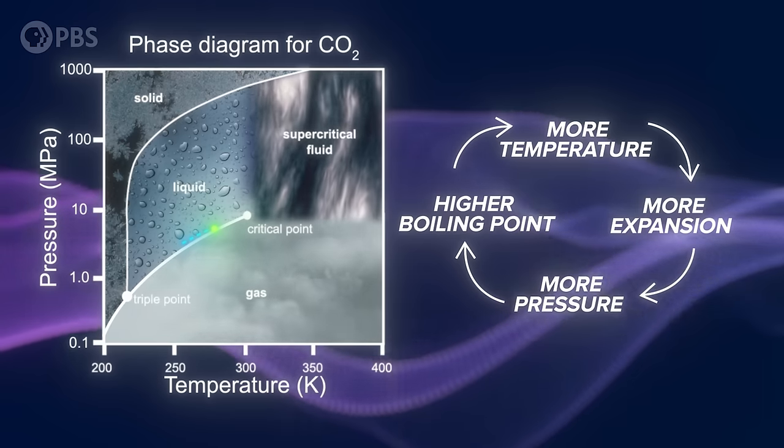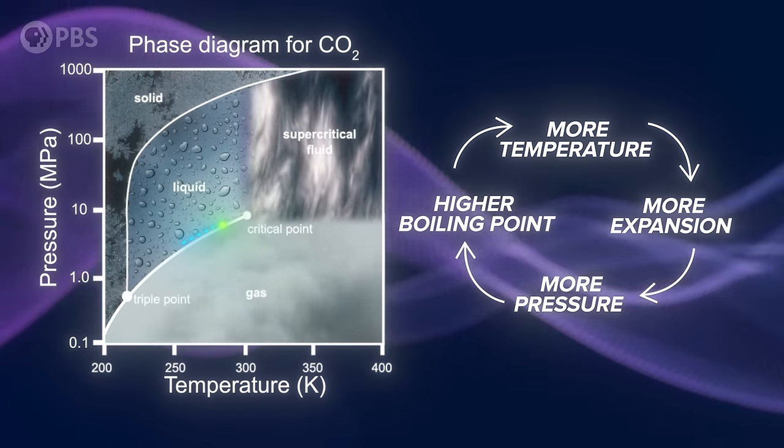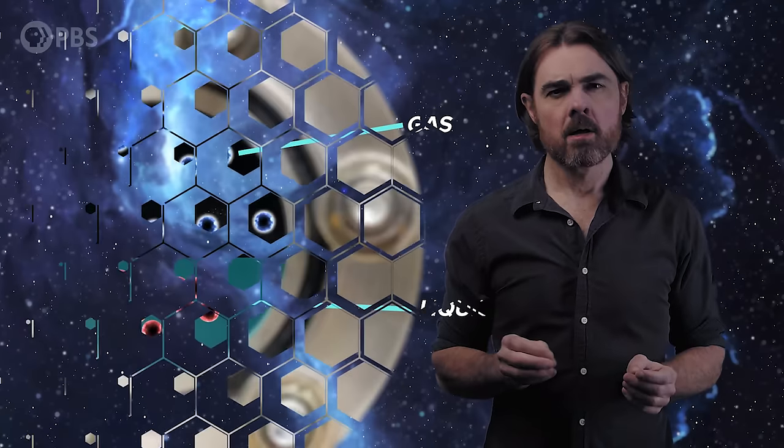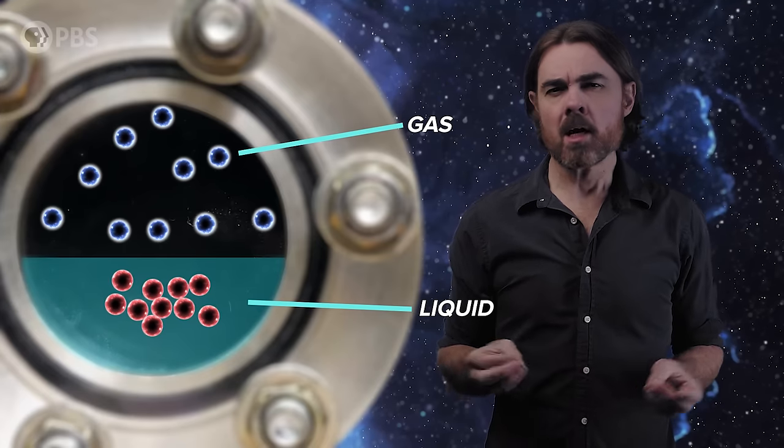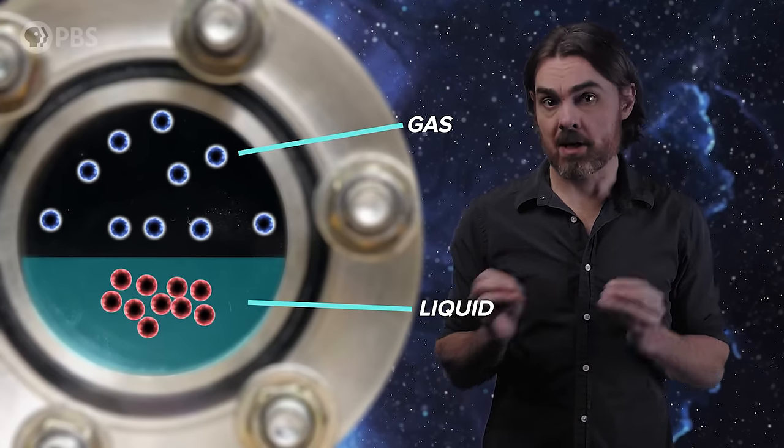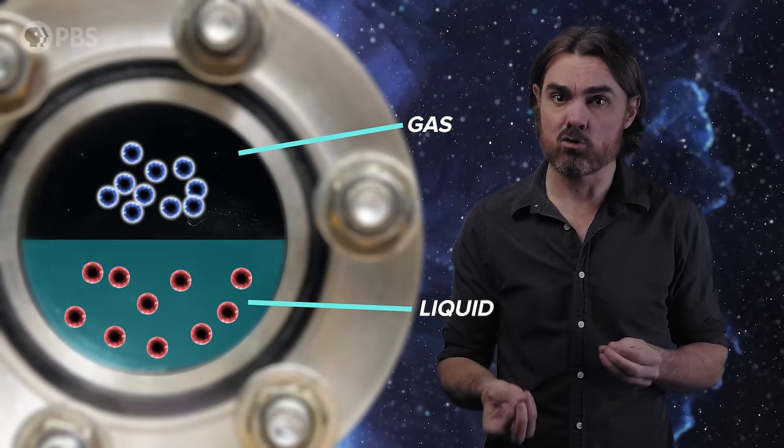But we're approaching our strange new region of the phase diagram where the rules are going to change. But before we get there, let's talk about density. Since the gas is being compressed, but its mass is not changing by much, its density must increase. Meanwhile the liquid is expanding in volume so its density drops.